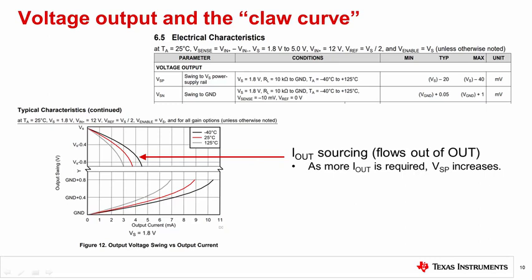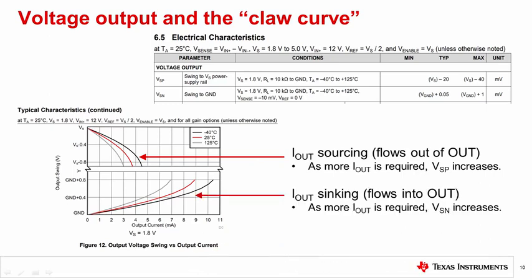The bottom curves represent sinking currents, which flow into the Out pin. The relationship is, as the sinking current Iout increases, so does the VSN. Overall, the more current the amplifier is required to drive, the less output dynamic range it will have because its swing to the rail capability will decrease.